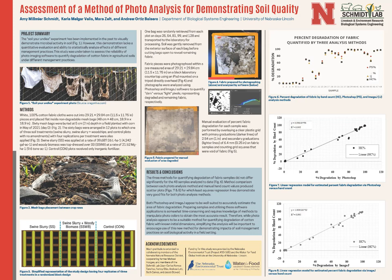Over on the right-hand side of the poster are the graphs that we developed that compare these different methods. That top graph shows the percent degradation of fabric quantified by the three different methods. Photoshop and ImageJ both were very close in their analysis of how much fabric was degraded based on looking at pixel color in that image. They were very close to each other and very close to the hand count method. The next two graphs show percent degradation of samples — the second graph is degradation as determined by Photoshop, and the bottom one is degradation as determined by ImageJ.